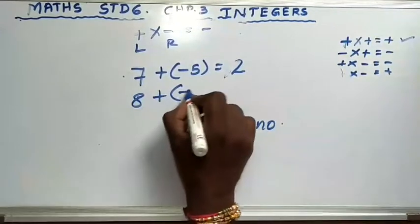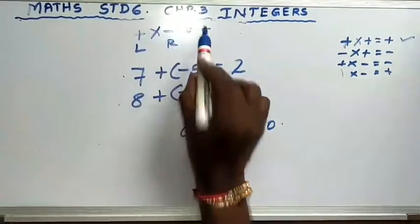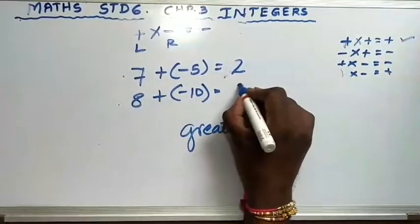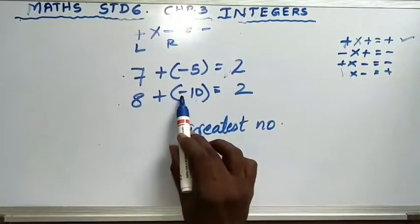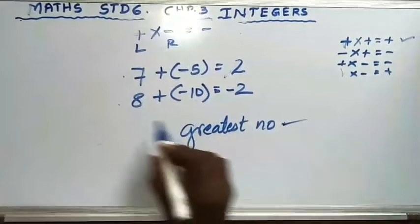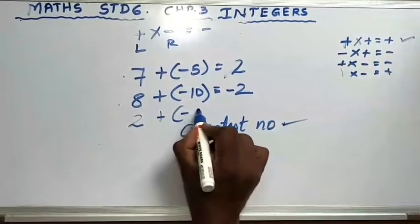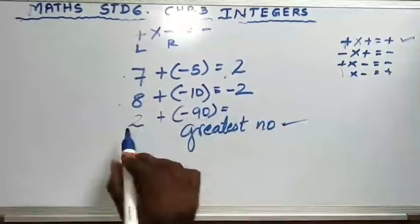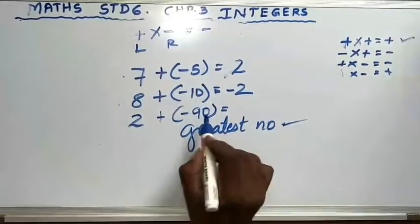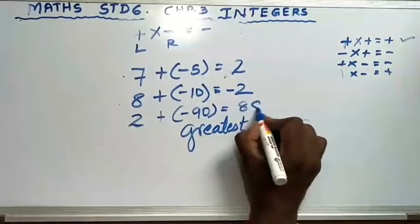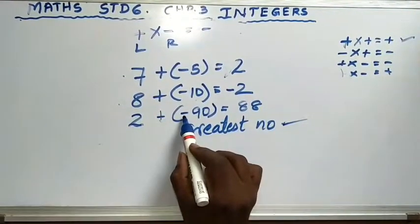8 plus minus 10: left side positive, right side negative — so subtract. 10 minus 8 is 2. Which number is greater: 8 or 10? 10 is greater, and 10 has a negative sign, so write minus 2. Next, 2 plus minus 90: subtract. 90 minus 2 is 88. Which number is greater: 2 or 90? 90 is greater, and 90 has a negative sign, so write negative 88.